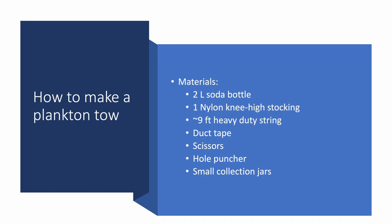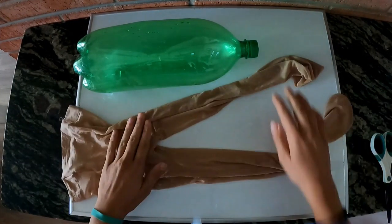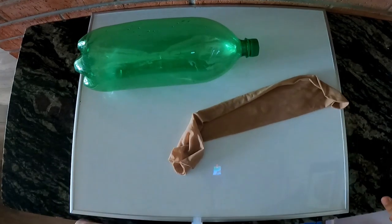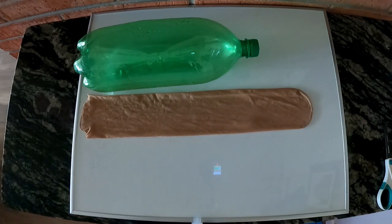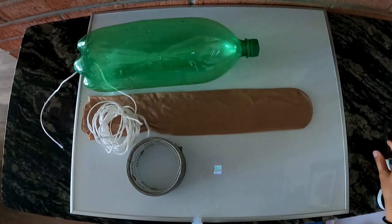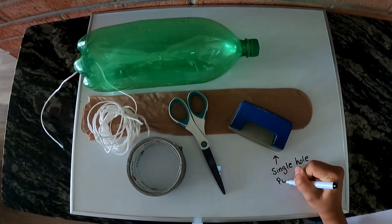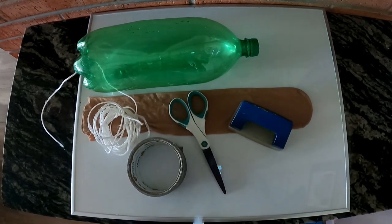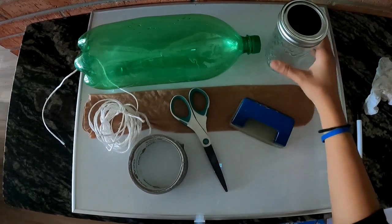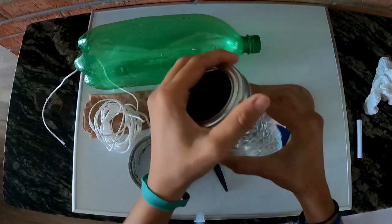You are going to need a two-liter soda bottle with the cap on it, one nylon knee-high stocking. If you're like me and you could only find tights, feel free to simply cut the tights into two pieces. You'll need around nine feet of nylon or heavy-duty string. You will need duct tape, a pair of scissors, a hole punch, preferably a single hole punch, but even the two or three hole punch will work, and a small collection jar. A mason jar works well, or baby food jars, anything that is sealable, that can contain water, and that is clean.